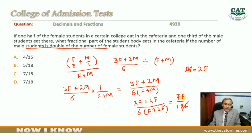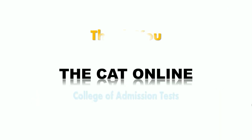This simplifies to 7 over 18, which is option D. So this is the correct answer.